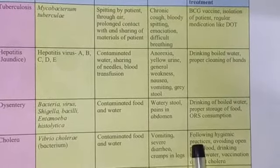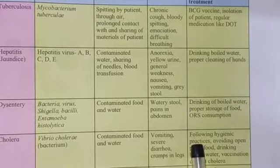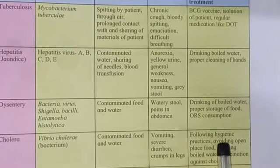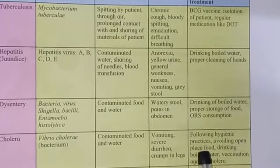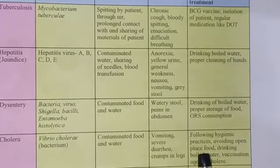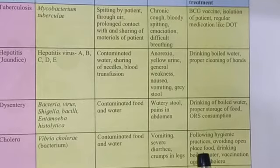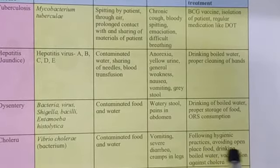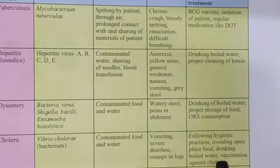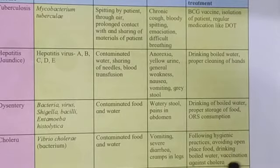How to prevent cholera? It is prevented by following hygienic practices — if a person follows cleanliness practices, cholera may not occur. Avoiding food from open places, drinking boiled water, and vaccination against cholera — if you do all this, you cannot get the disease.